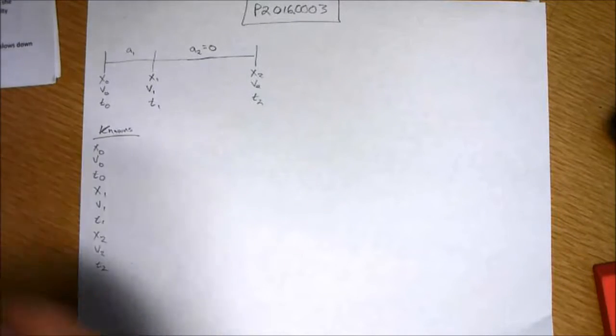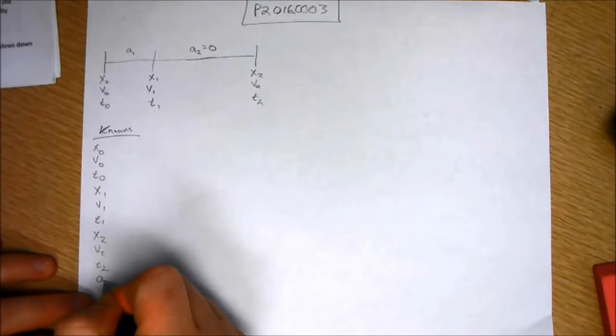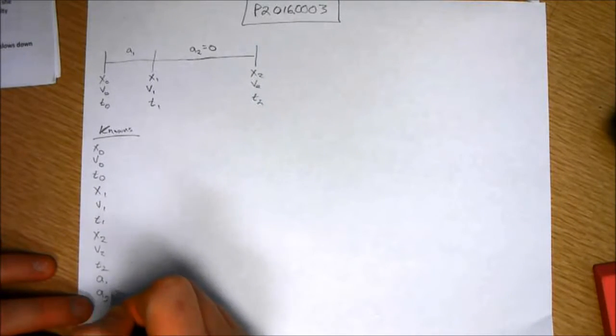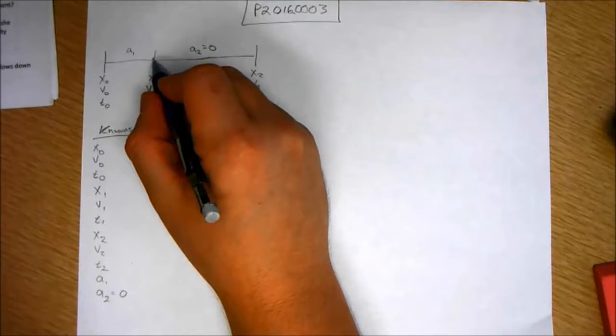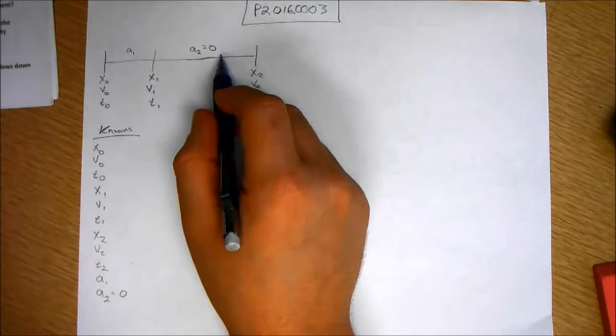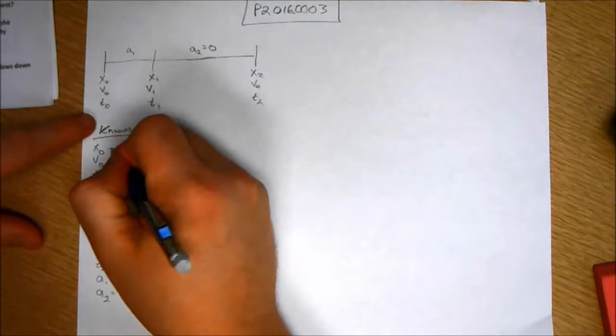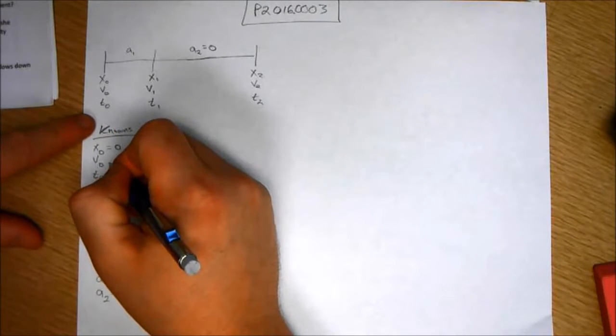First of all, I forgot acceleration. Acceleration one, acceleration two. We know acceleration two equals zero because that is this part where she accelerates for this time, and then there's no acceleration. We can define the starting point as zero.